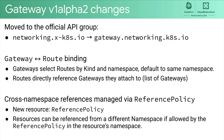One of the major changes in v1alpha2 is the simplification of how gateways and routes bind to each other. Gateways can now select routes by kind and namespace, with the default being routes in the same namespace as the gateway. This enables ease of use for simple deployments while giving flexibility for more complex cross-namespace relationships. Routes directly reference the gateways they attach to. We previously had a more complex label selection mechanism, but this turned out to be more complicated to understand and support.